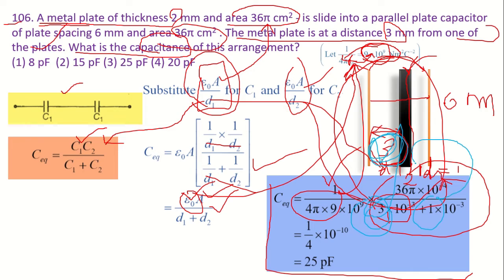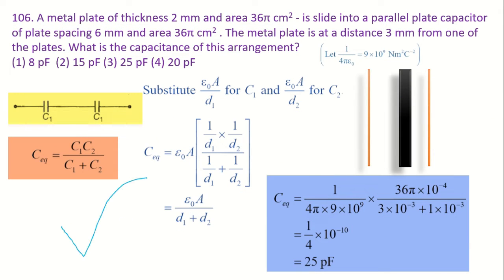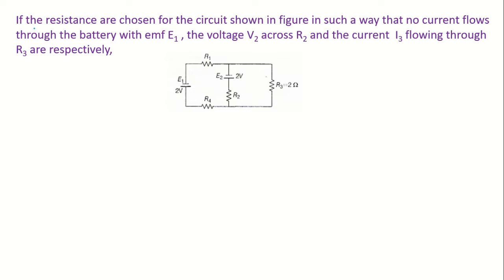This distance is 3 mm, this one is the remaining 1 mm — D1 and D2 are now clear. I am giving time to take a screenshot. You can take a screenshot of this question now. D1 is 3, the plate is 2, and D2 is 1. Now let us move on to the next question.